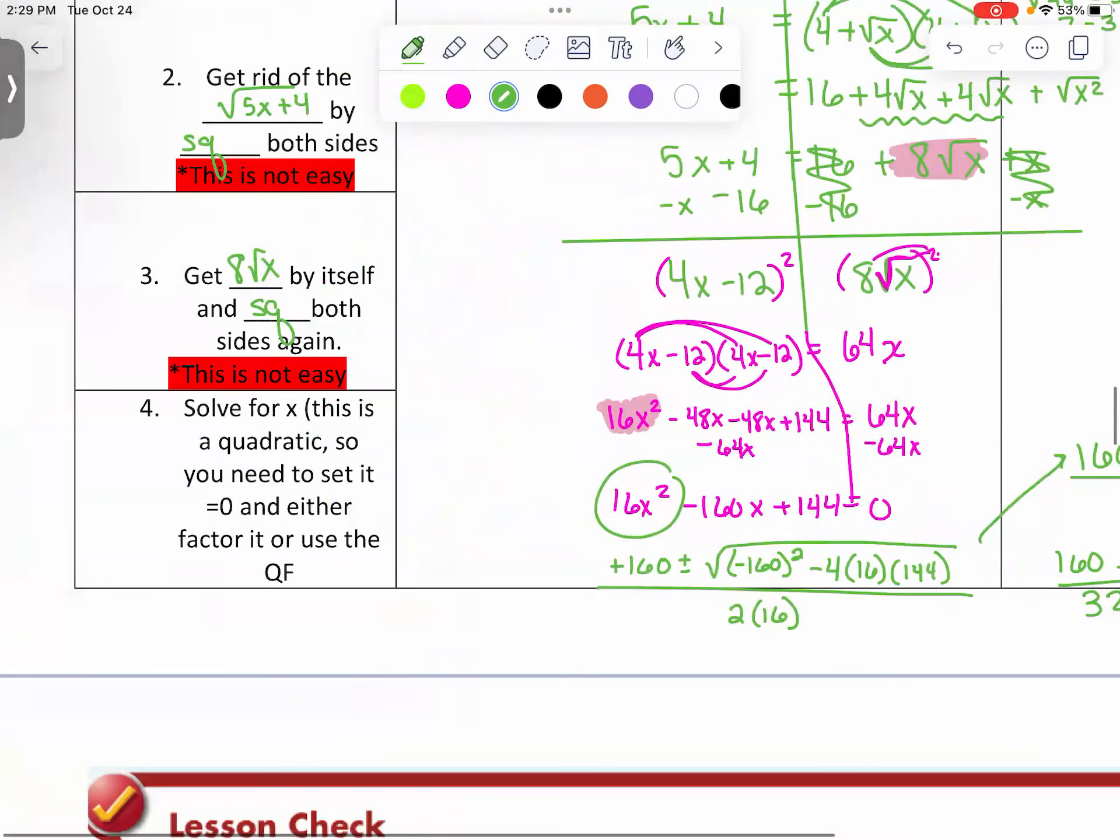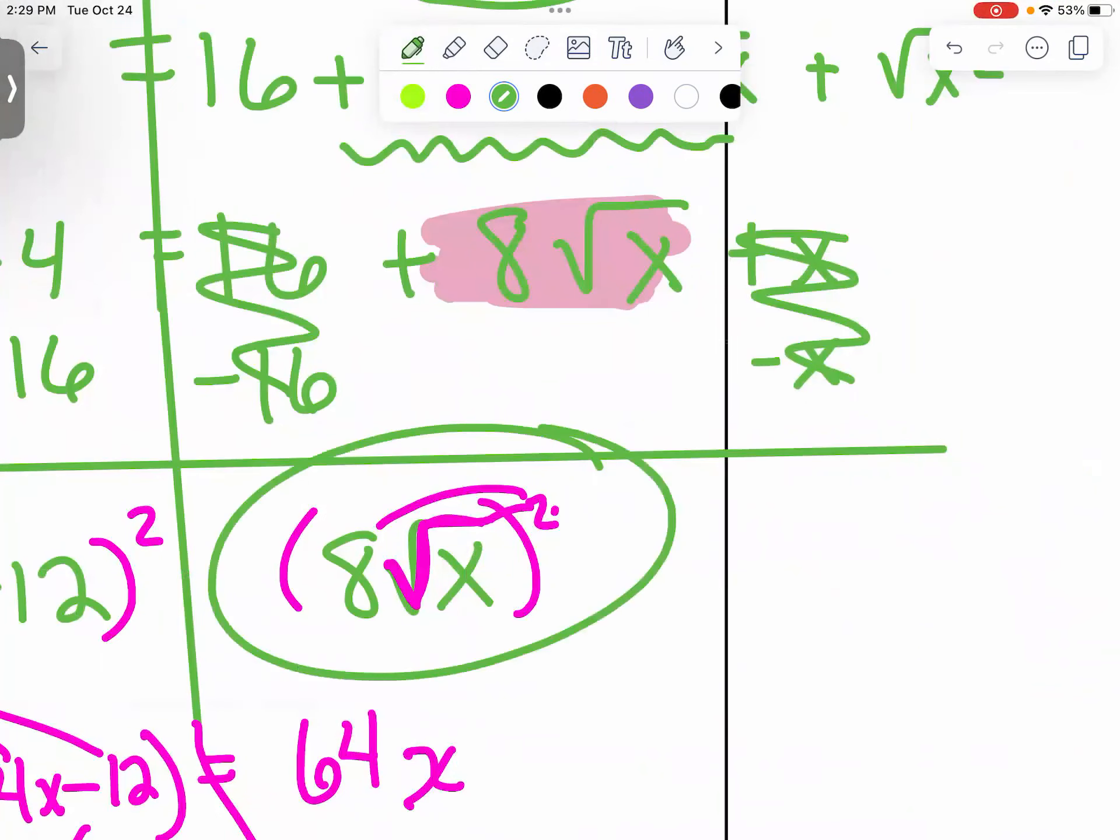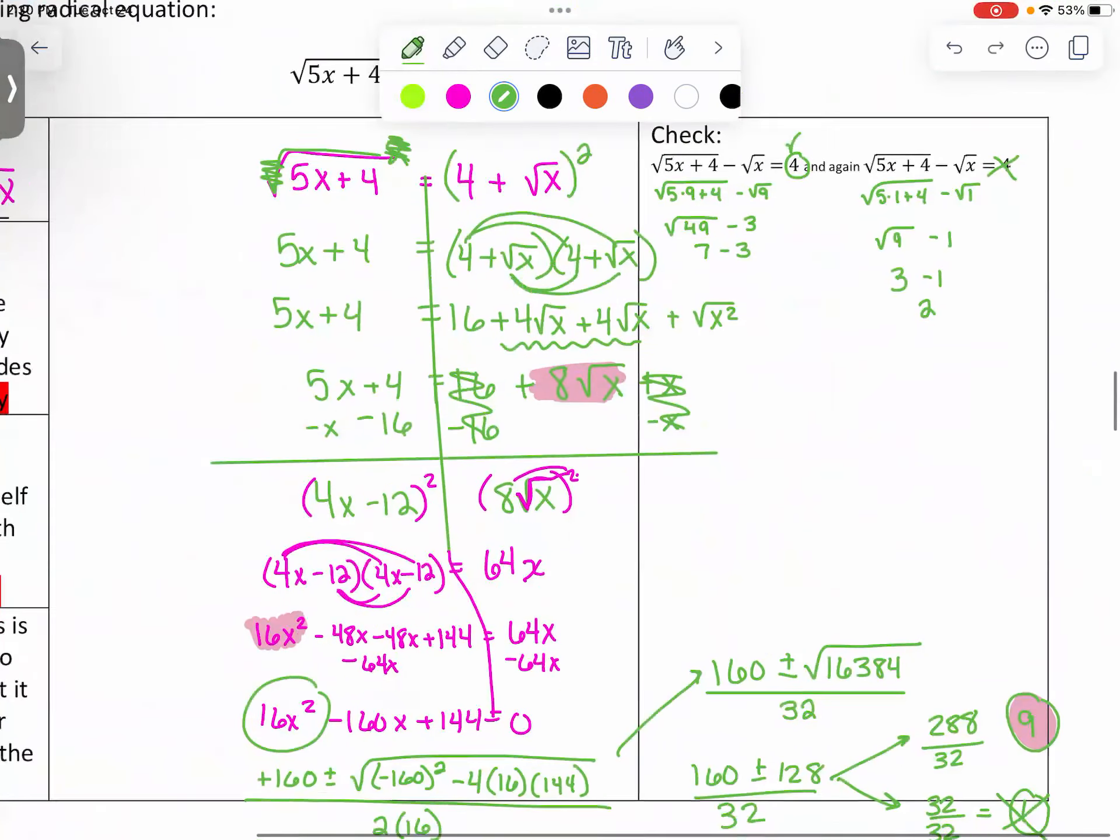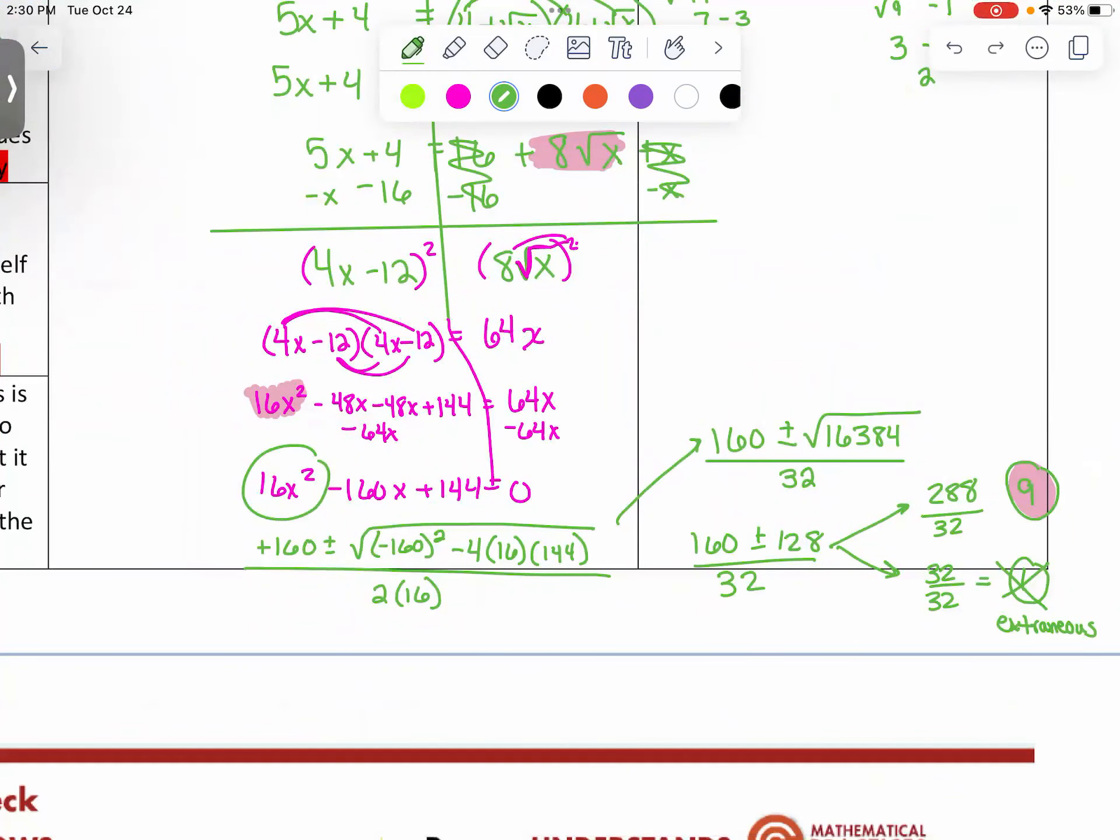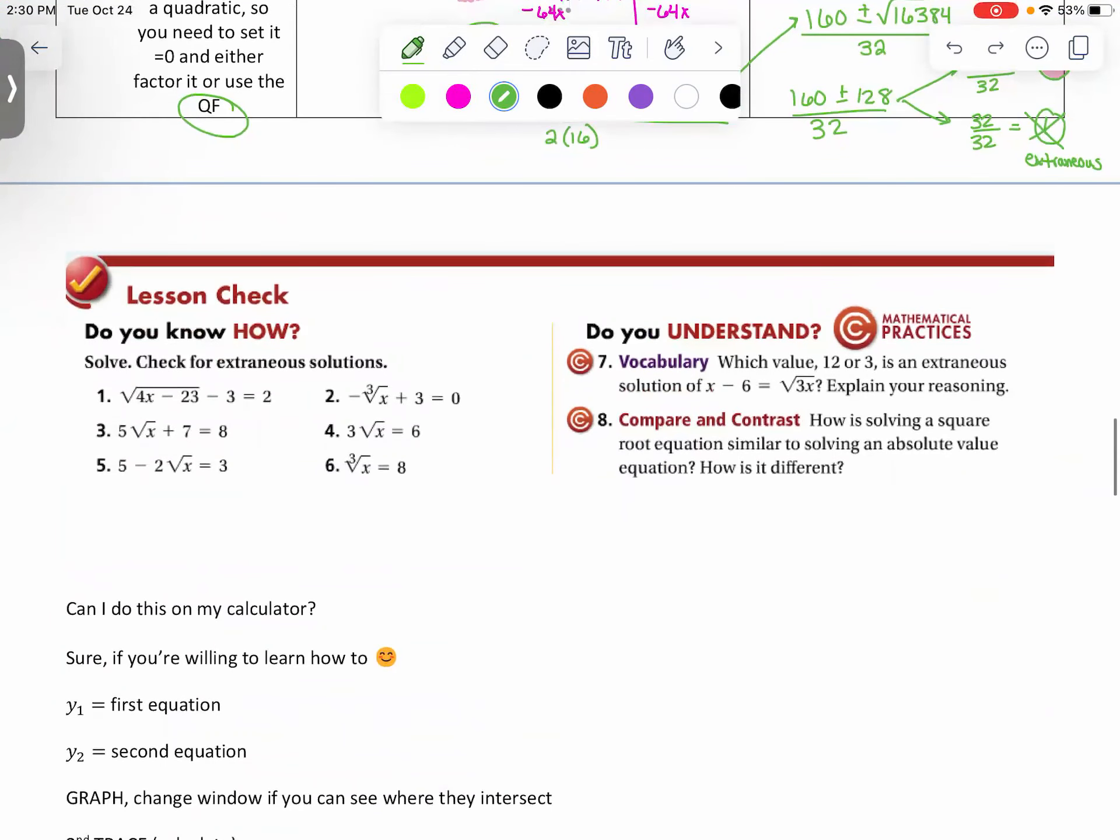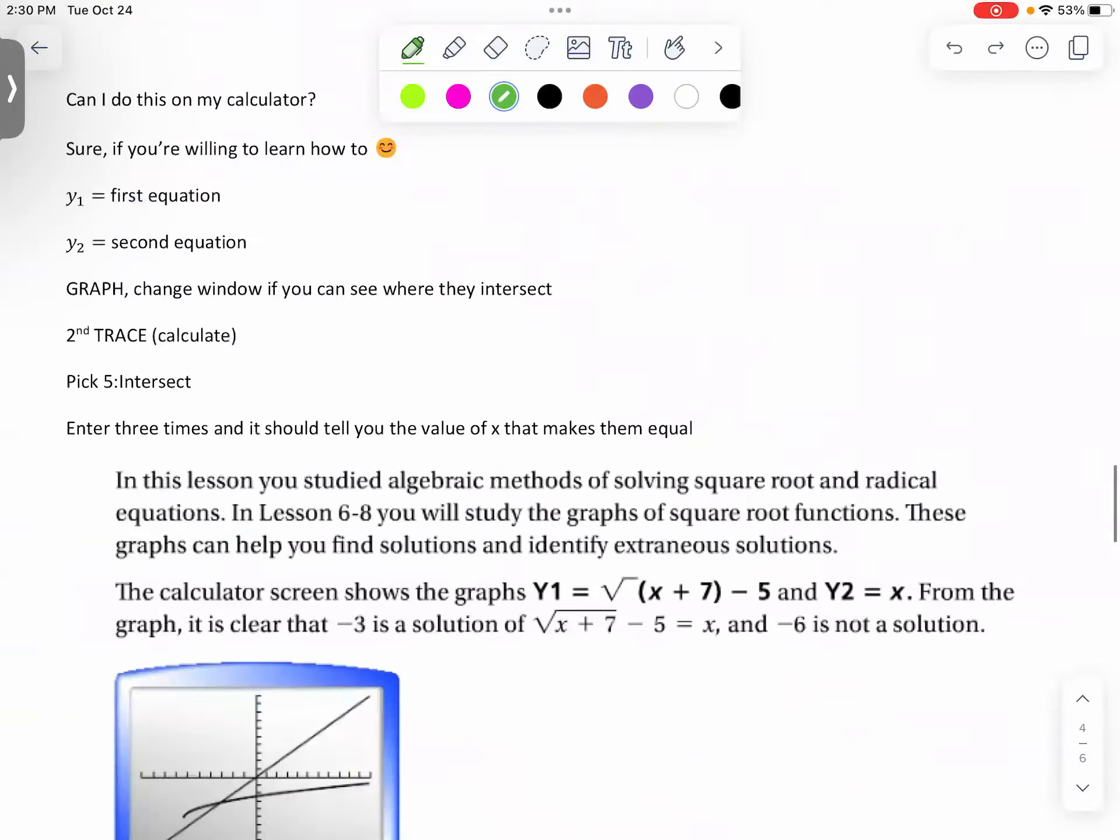So, we got this one by itself. We squared both sides. We solved for X. We used our quadratic formula. Could have factored. I think the hardest part right here is squaring that. Multiply that by each other. And then you can do the lesson check and then, yeah, very similar. And then I have an extra video for this for you guys if you want it.